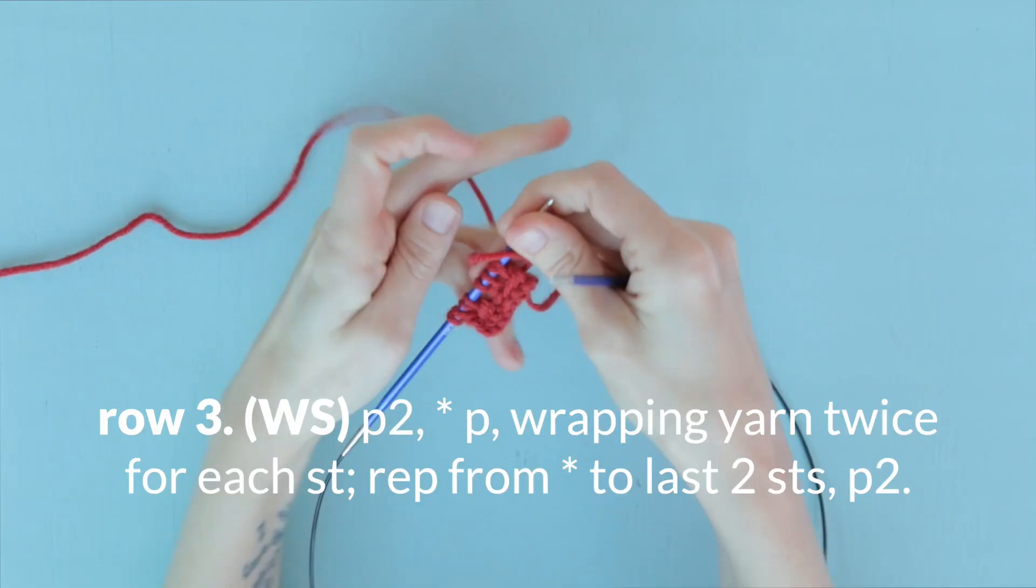Now we're going to work row three, which is again a wrong side row. Row three begins with purl two.